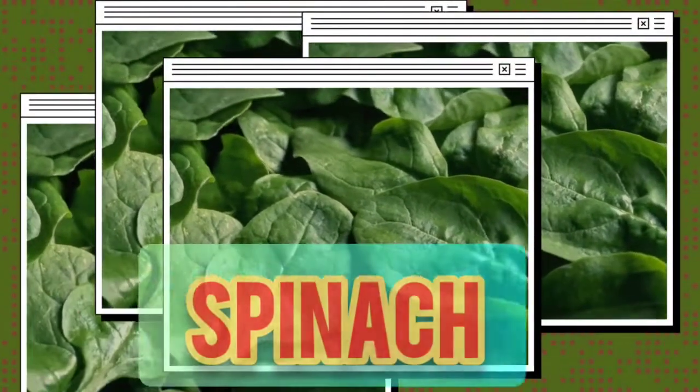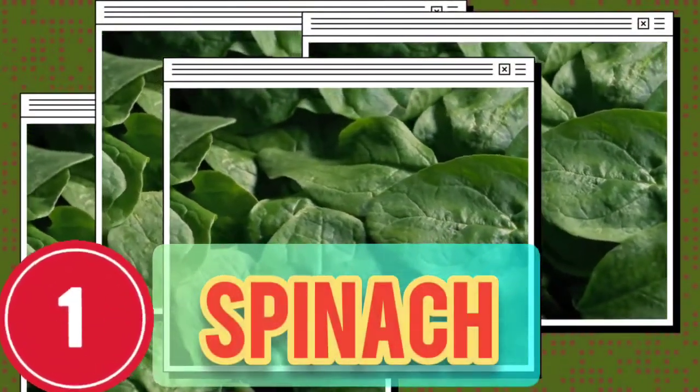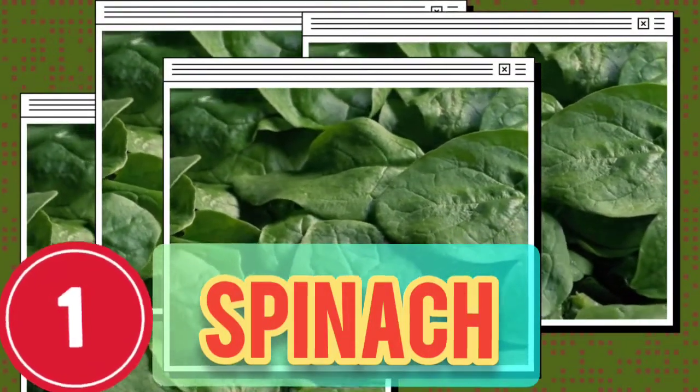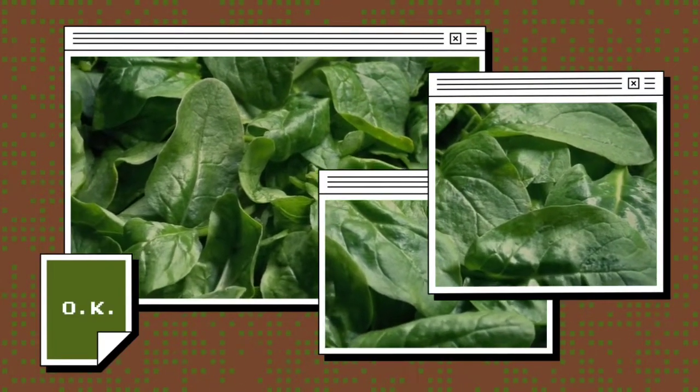Number one on our list is spinach. Spinach was a complete game changer in my quest to getting rid of this terrible condition. Spinach contains several important plant compounds, specifically nitrates. Nitrates are important for healthy heart health, and that's going to help get that blood flow going, which is something I talk about constantly.